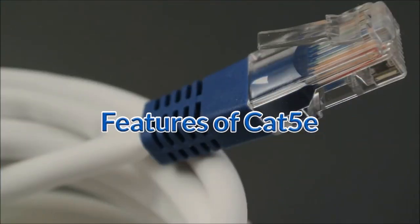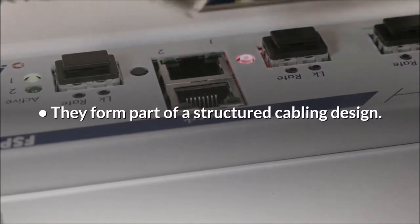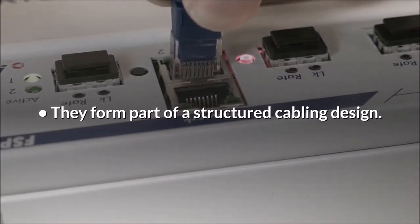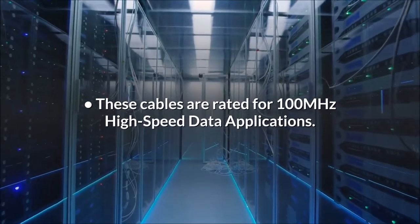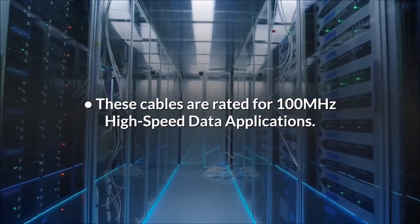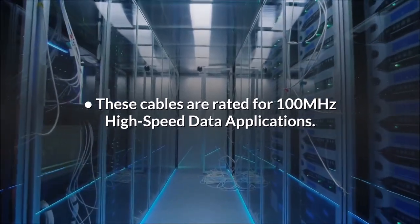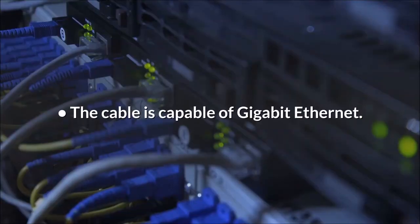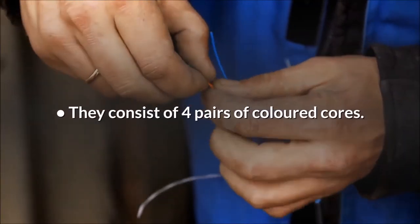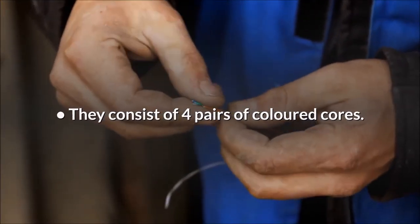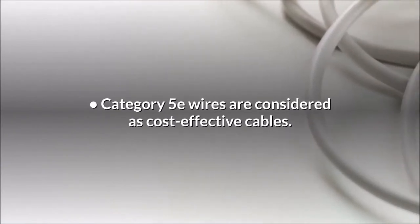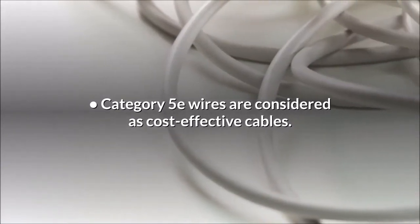Features of Cat 5e. They form part of a structured cabling design. These cables are rated for 100 MHz high-speed data applications. The cable is capable of Gigabit Ethernet. They consist of 4 pairs of colored cores. Category 5e wires are considered as cost-effective cables.